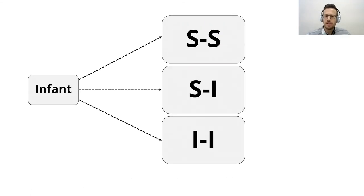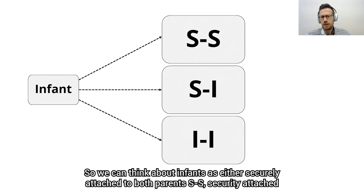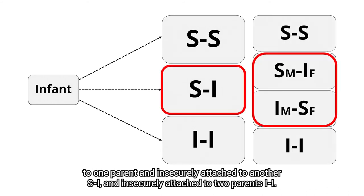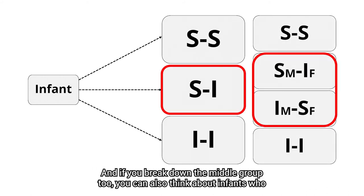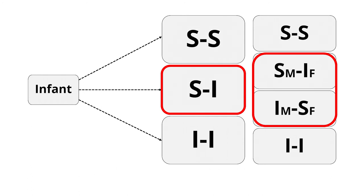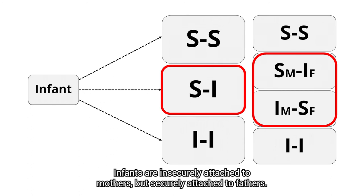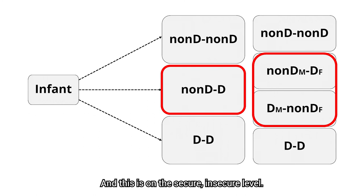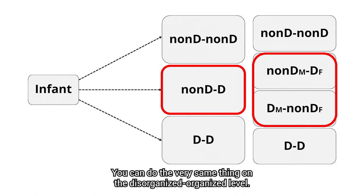We can think about infants as either securely attached to both parents (SS), securely attached to one parent and insecurely attached to another (SI), or insecurely attached to two parents (II). If you break down the middle group, you can also think about infants who are securely attached only to mothers but insecurely attached to fathers, and vice versa — infants who are insecurely attached to mothers but securely attached to fathers. This is on the secure-insecure level; you can do the very same thing on the disorganized-organized level.